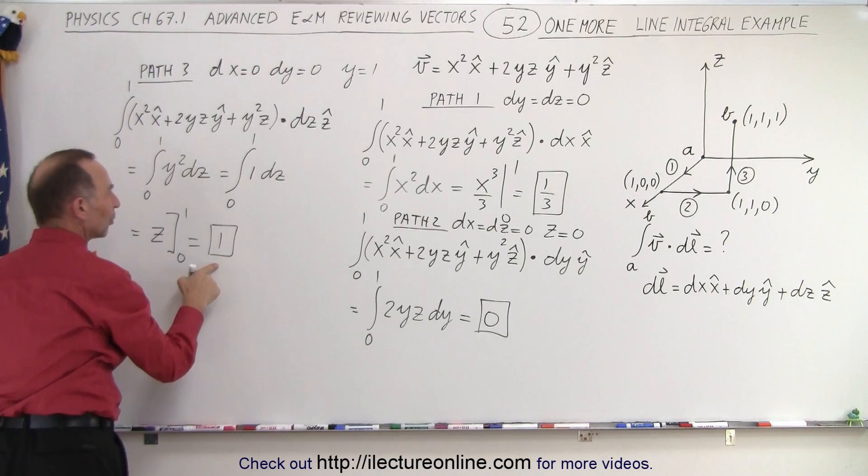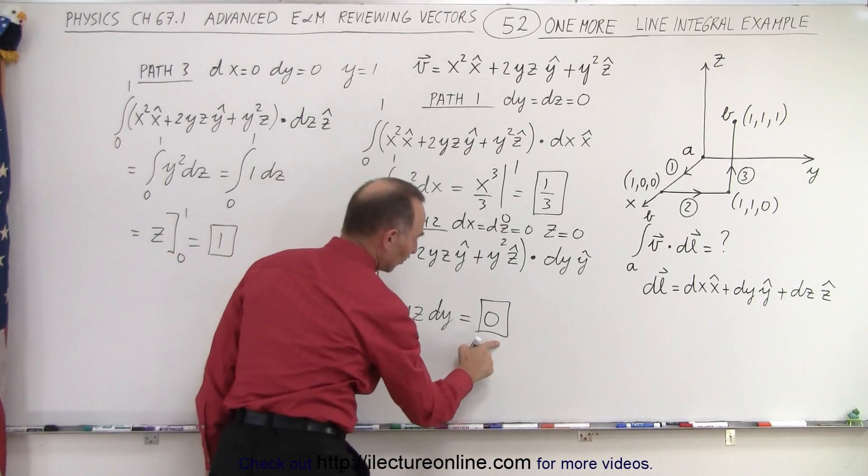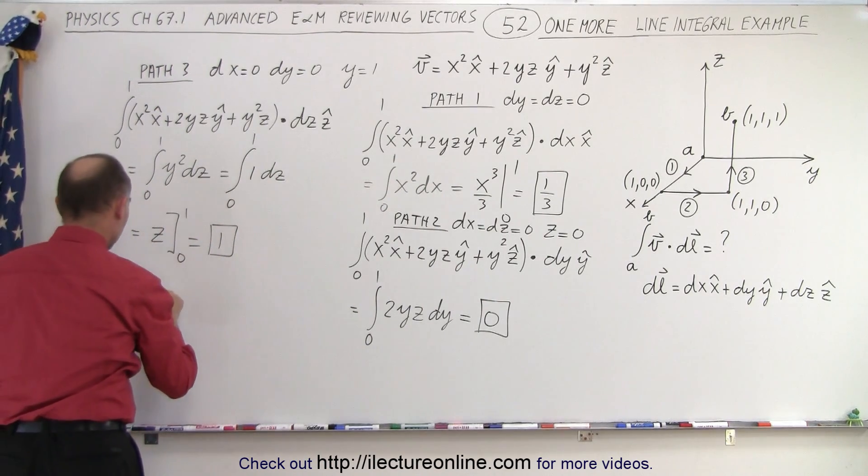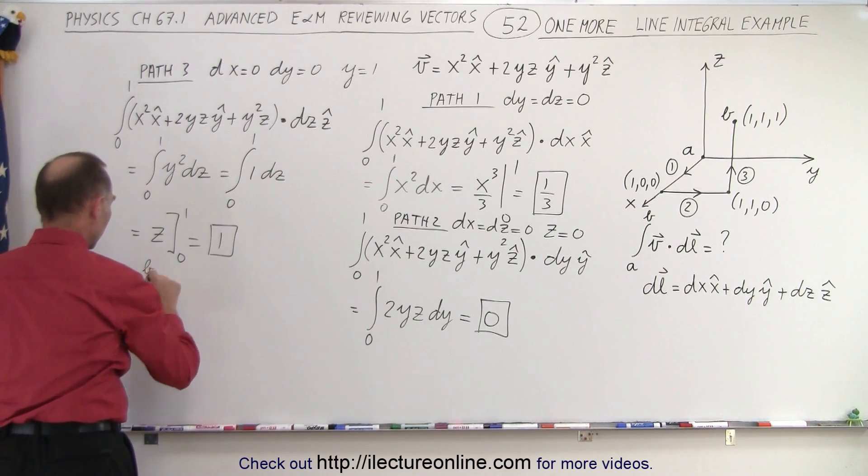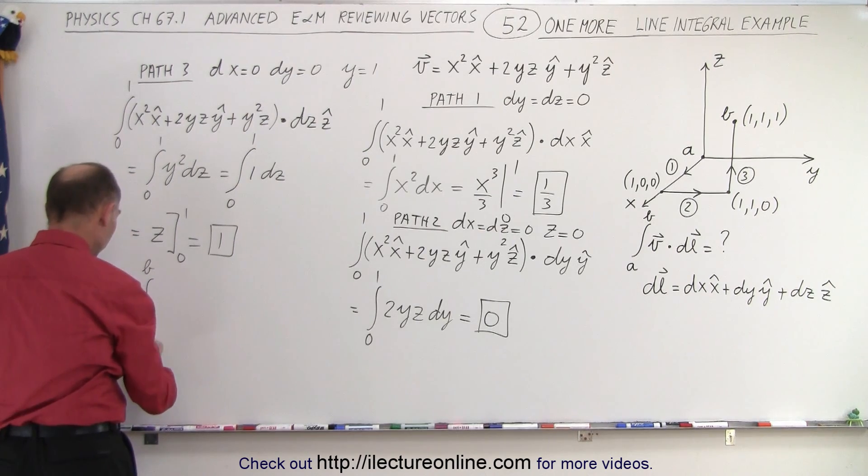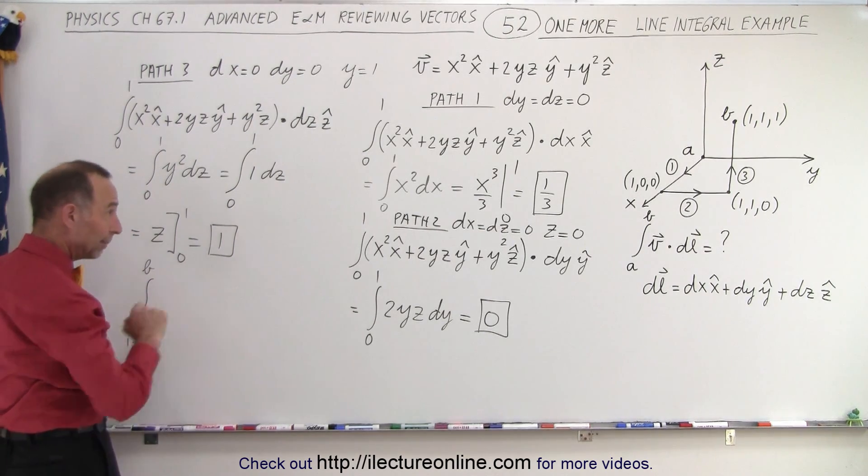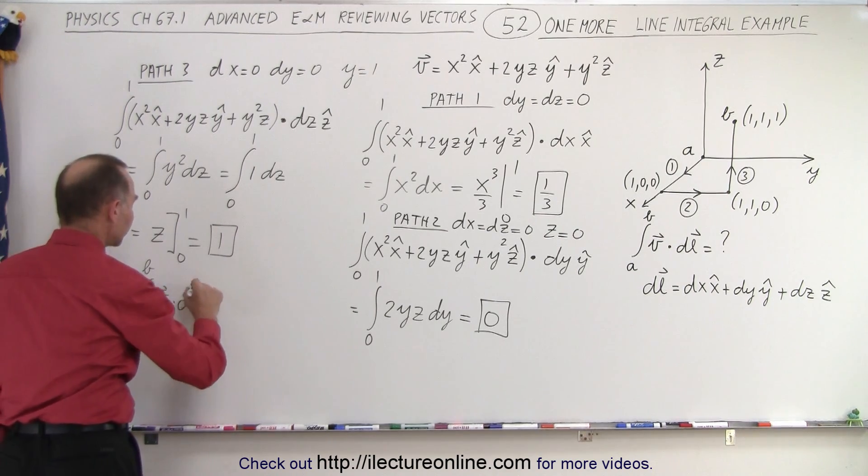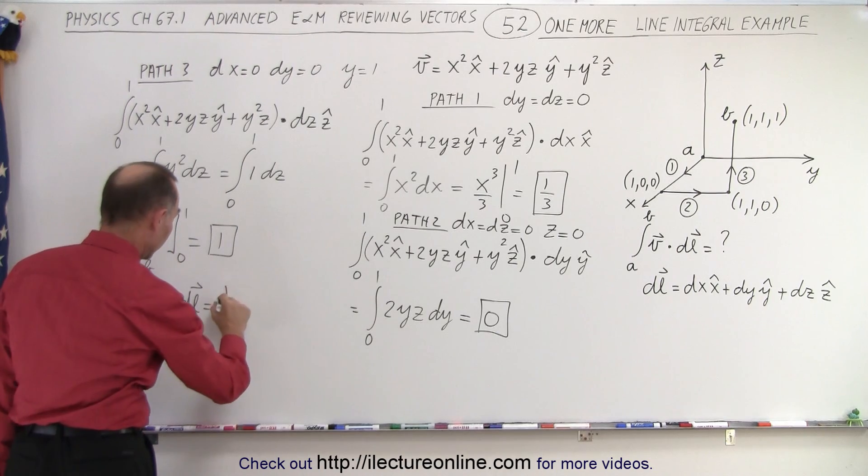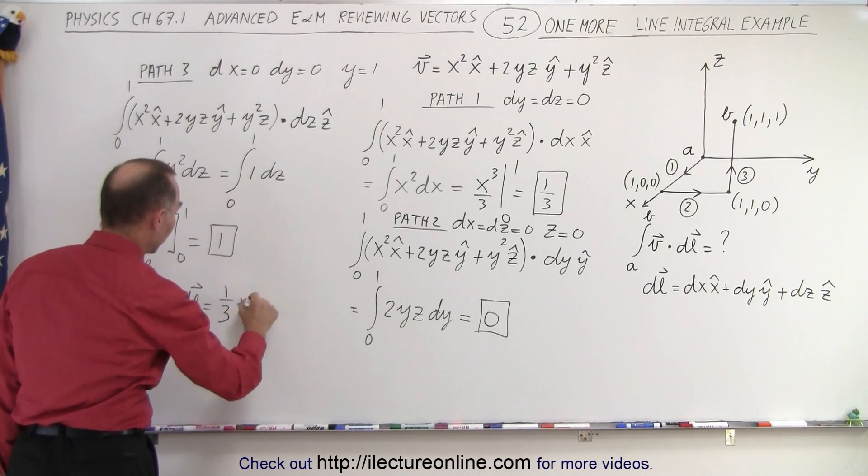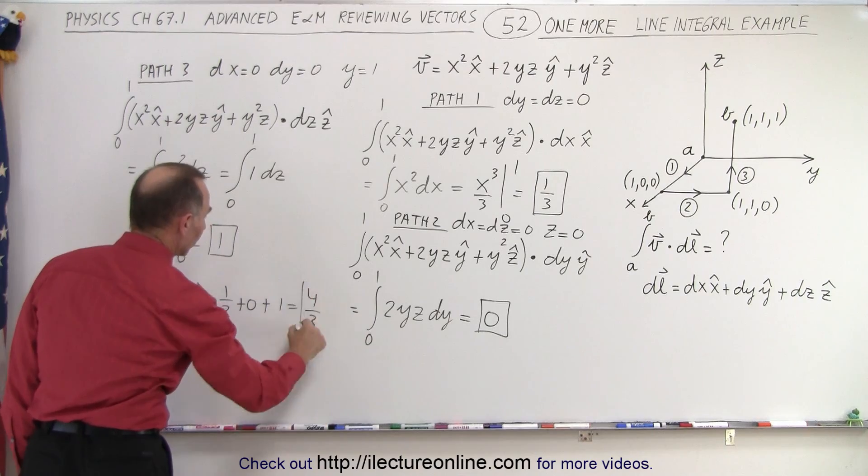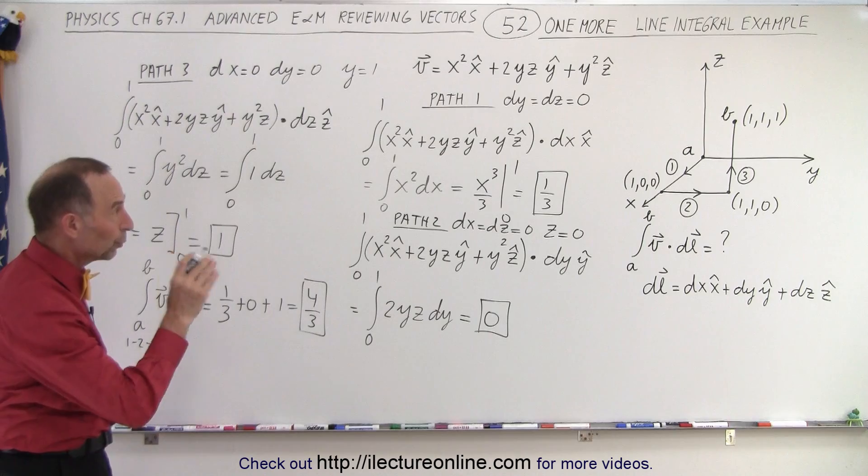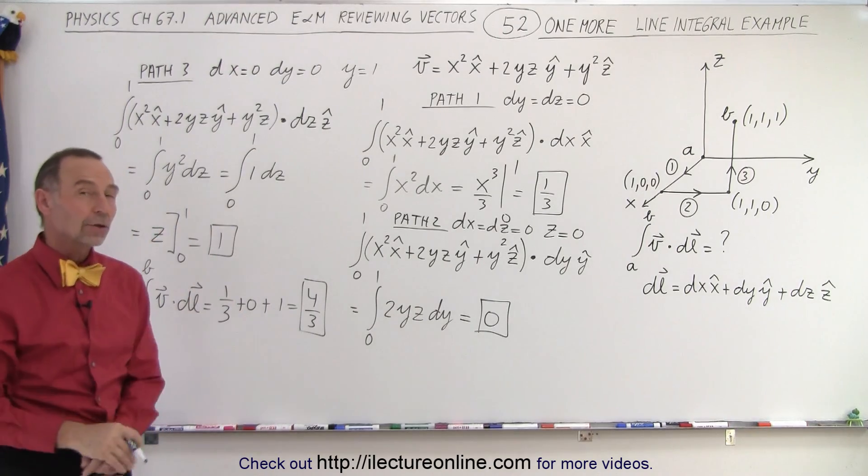So now we have 1 as a result here, we have 0 as a result there, we have 1/3 as a result there. So when we add them all up, the line integral, the integral from a to b along path 1 to 2 to 3, traveling along that path of the vector dot dl is equal to 1/3 plus 0 plus 1, which is 4/3. And that's the total line integral from the origin to the point (1,1,1) if we travel along that path.